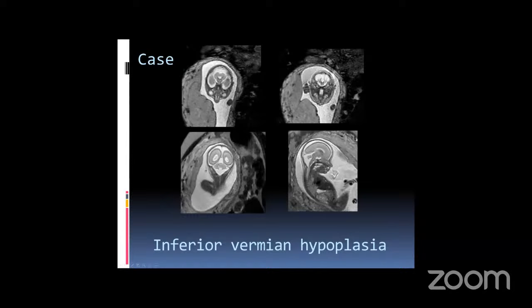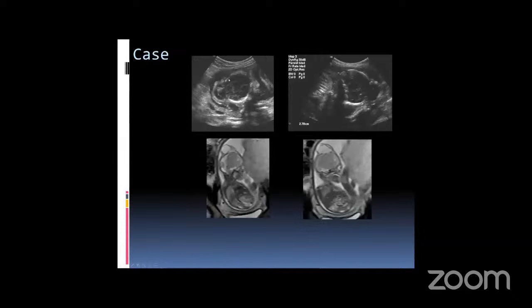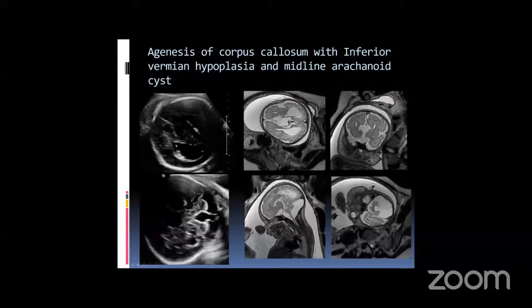MRI can help look for other abnormalities. A patient with an encephalocele seen on ultrasound — the question was whether there was brain parenchyma inside. MRI showed the skull defect was dysplastic and disorganized but nothing was protruding outside — no brain parenchyma in the encephalocele. Another patient had colpocephaly on ultrasound with an abnormal posterior fossa and a communication between the fourth ventricle and the cisterna magna.